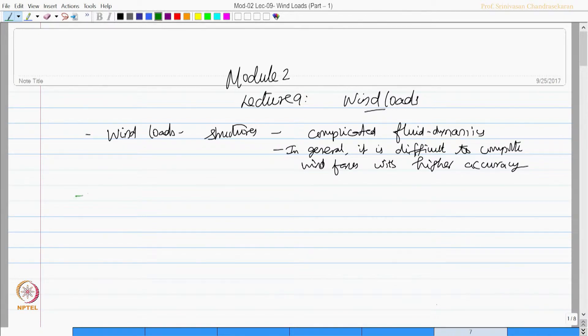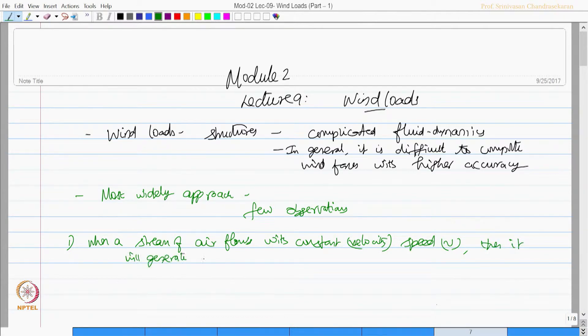The most widely used approach to estimate wind forces is based on observations. When a stream of air flows with constant speed v, it generates force on a flat plate of area A when the plate is placed orthogonal, perpendicular to the flow direction.